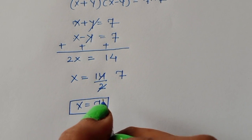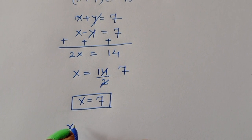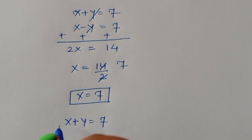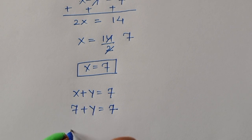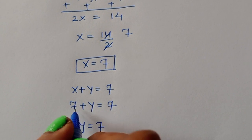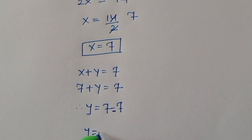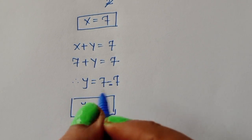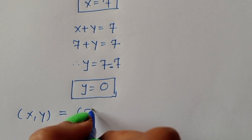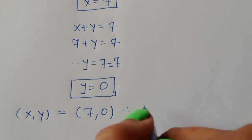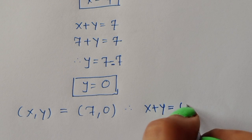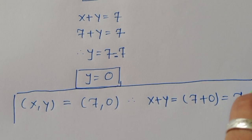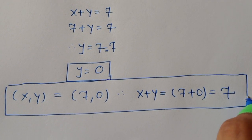Now to find y, we take the equation x + y = 7 and substitute x = 7: 7 + y = 7, therefore y = 7 - 7 = 0. So from Case 1, x = 7 and y = 0, and therefore x + y = 7 + 0 = 7. This is the value of x + y from Case 1.